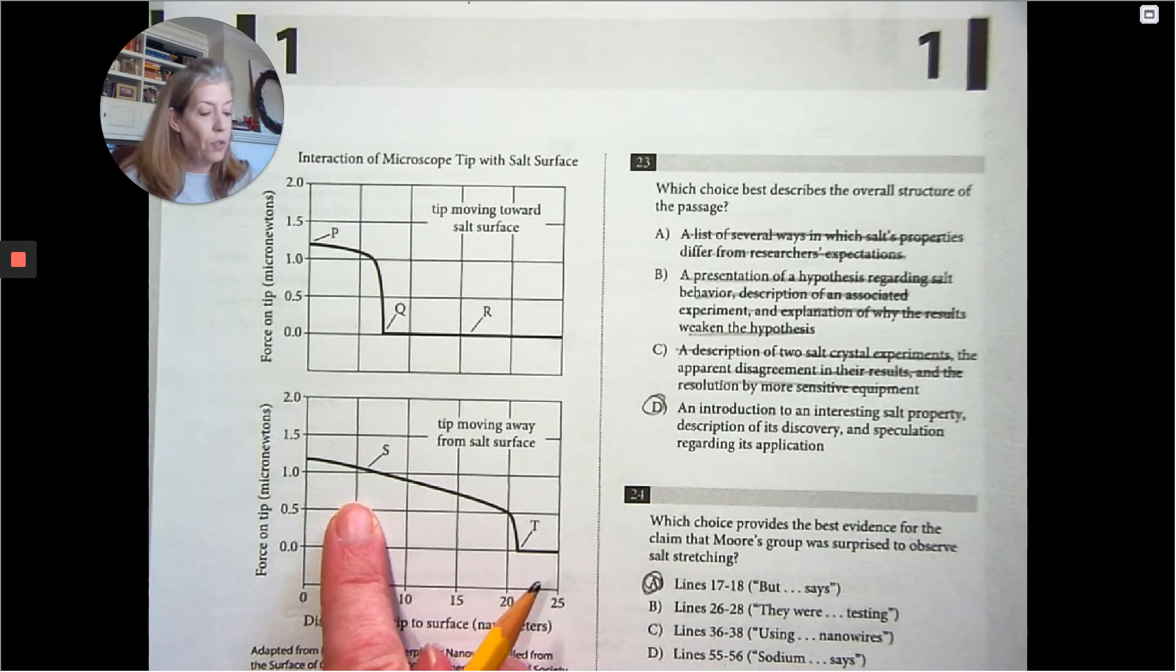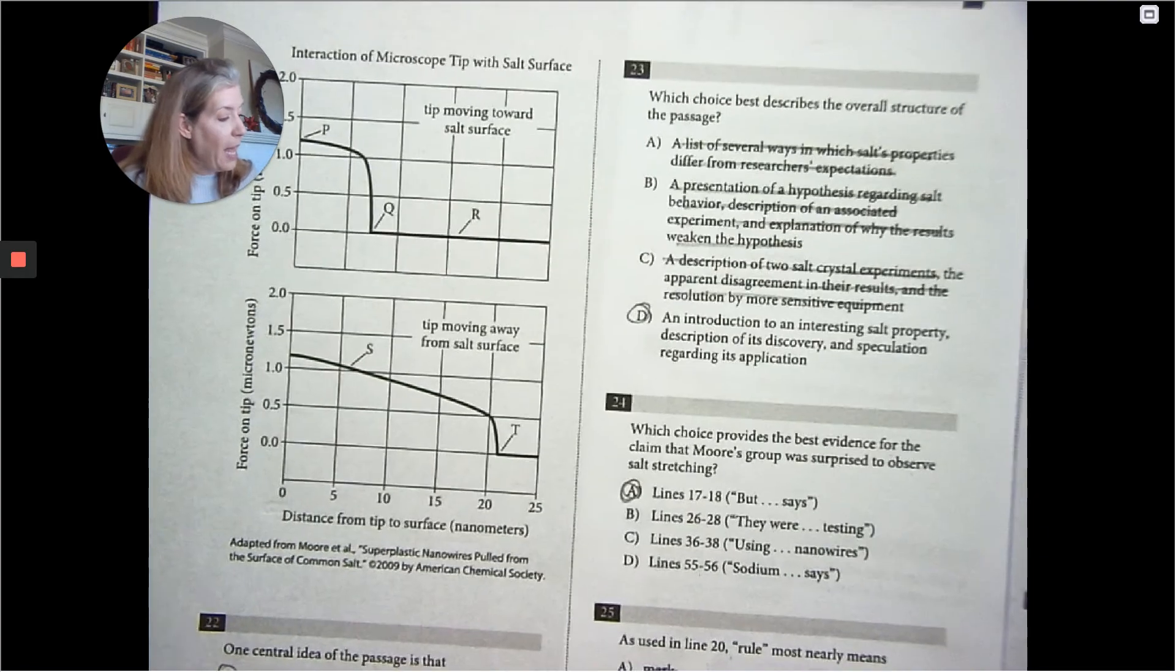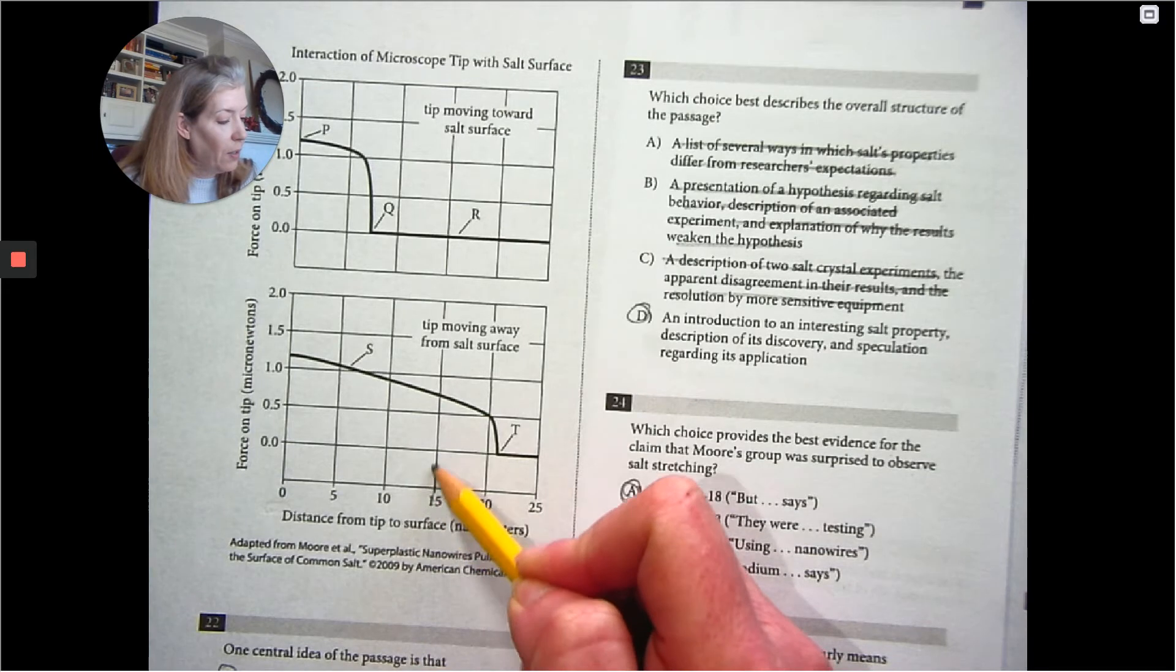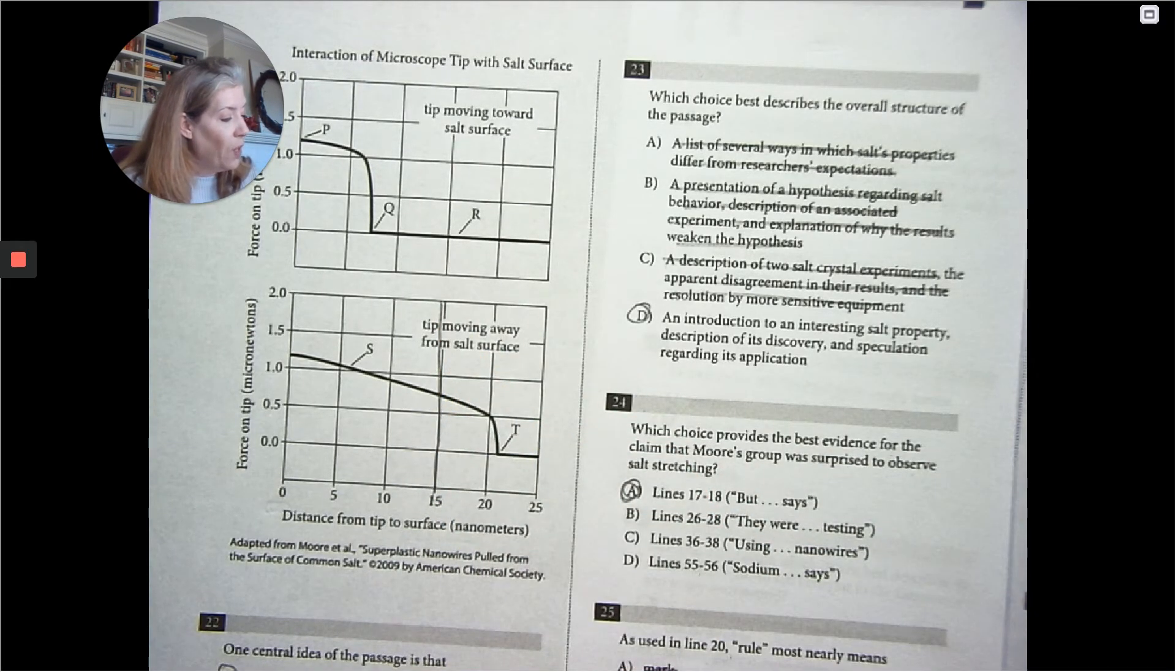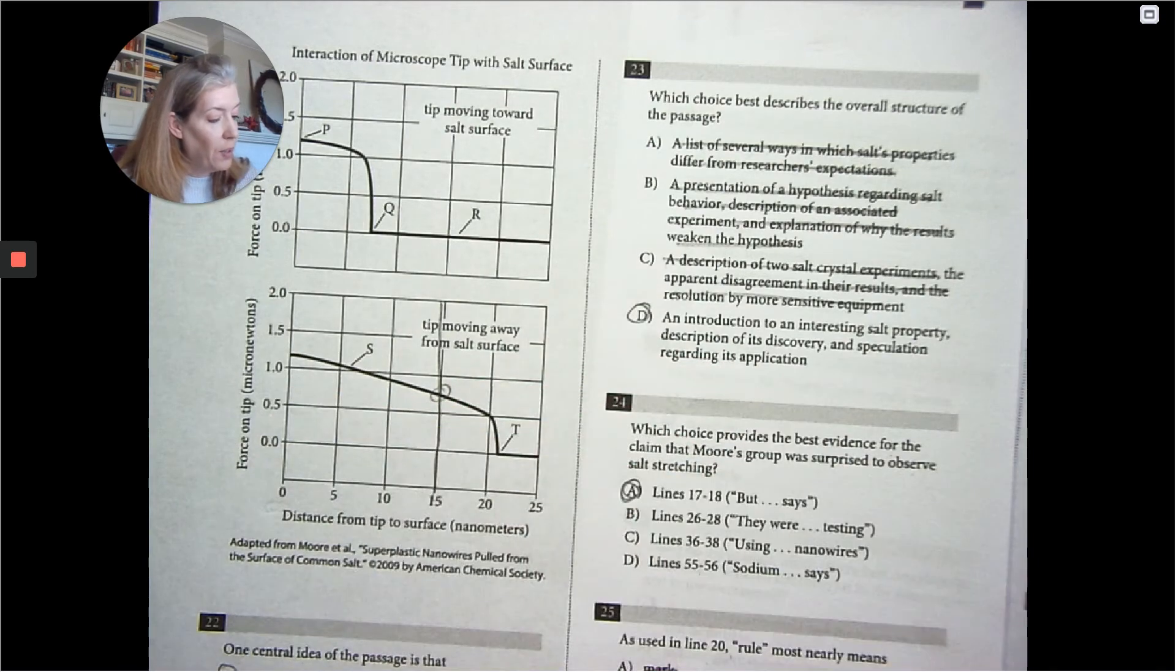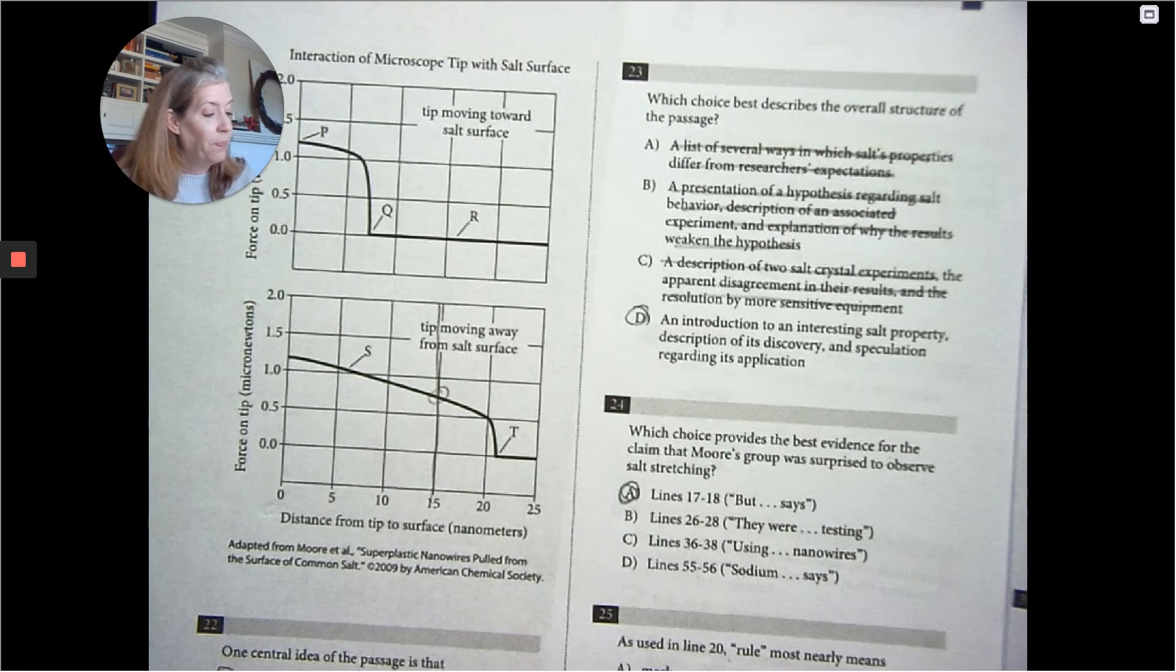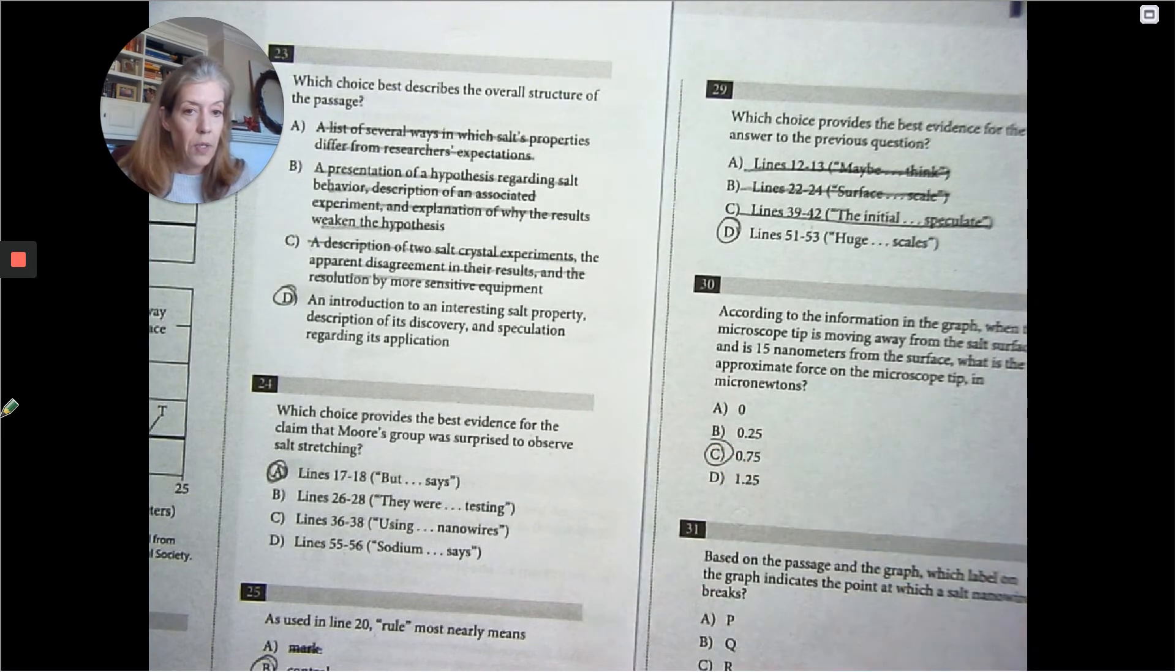The microscope tip is moving away from the salt surface. So we're going to look for moving away. Okay. Moving away from the salt surface. And is 15 nanometers right here. From the surface. What is the approximate force on the microscope tip? This is force on the tip. So the answer is 0.75. There's our answer.